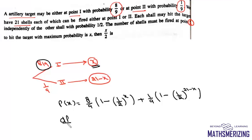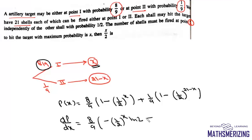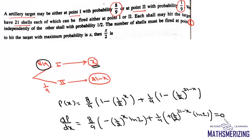We differentiate and find dp/dx. It equals (8/9) times (-(1/2)^x times ln2) plus (1/9) times (-(1/2)^(21-x) times (-ln2)), which simplifies, and we set it equal to zero.